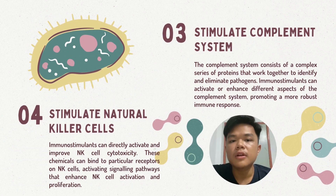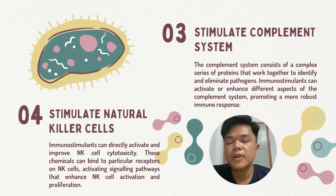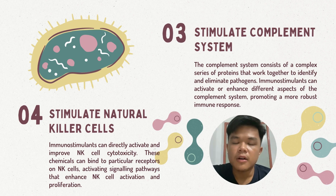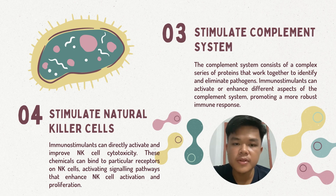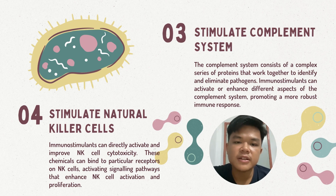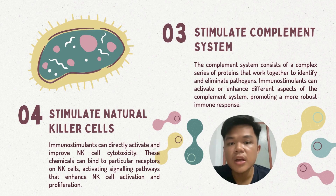Moreover, immunostimulants can stimulate the complement system, including the classical pathway, lectin pathway, and the alternative pathway. The complement system consists of a complex series of proteins that work together to identify and eliminate pathogens. Immunostimulants can activate or enhance different aspects of the complement system, promoting a more robust immune response. For instance, they can directly trigger the alternative pathway by interacting with certain complement components or by promoting the formation of surface complexes that activate complement proteins.